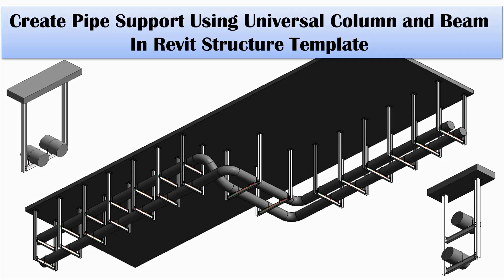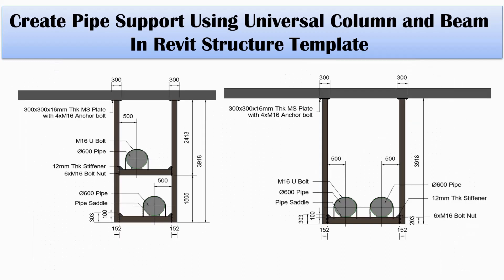Hello everyone. Today I would like to show you how to create pipe support using universal column and beam in Revit's structure template. I will refer the data in the picture to select the column and beam size, and to create structure connection.